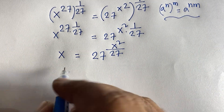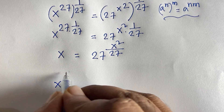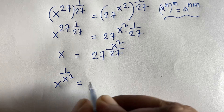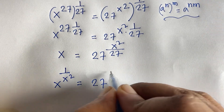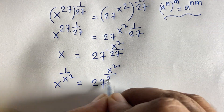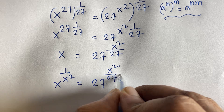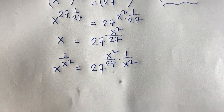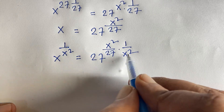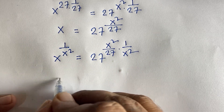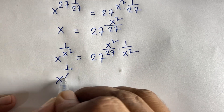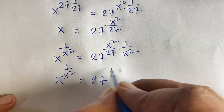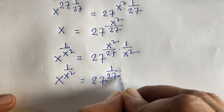Now at this moment, I use both side exponent 1 over x squared. So in this case, x squared over 27 times 1 over x squared — here x squared is cancelled. We will find out x to the power 1 over x squared is equal to 27 to the power 1 over 27.